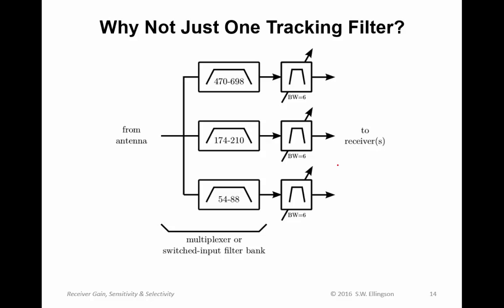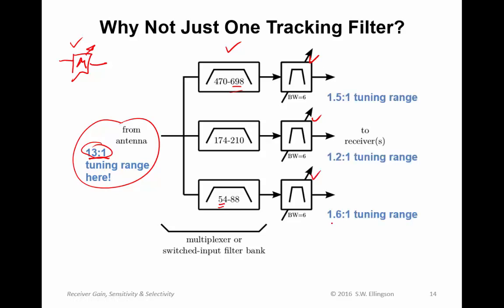Now you might ask, why not just use one tracking filter? The answer has to do with the difficulty in designing filters. Note the tuning range is 13 to 1. A single tracking filter would have to tune continuously from 58 to 698 megahertz, a 13 to 1 range. That's an extraordinarily difficult filter to design, 6 megahertz wide tuning over 13 to 1. It's far easier to break that up into bands with three tracking filters that tune over much narrower bandwidth. This filter only tunes 1.6 to 1, 1.2 to 1, 1.5 to 1. So these tracking filters are way easier to implement.